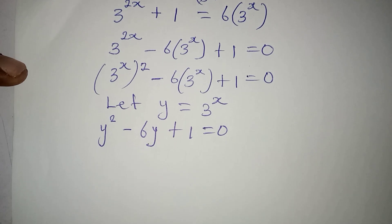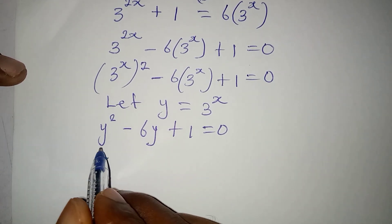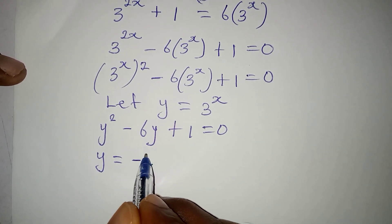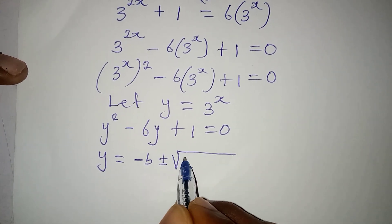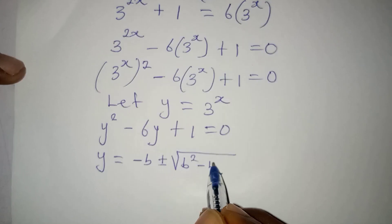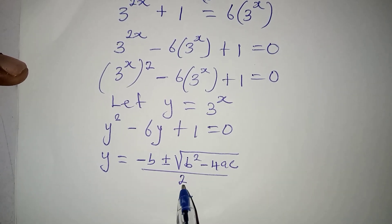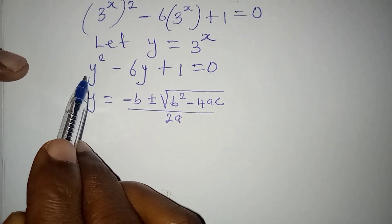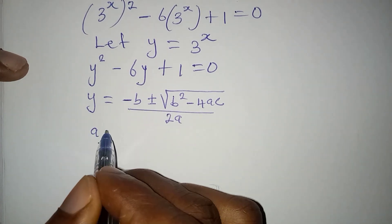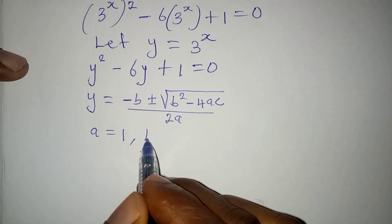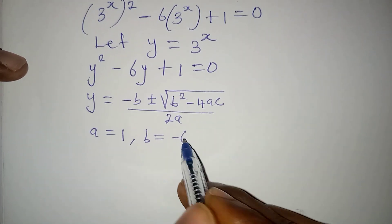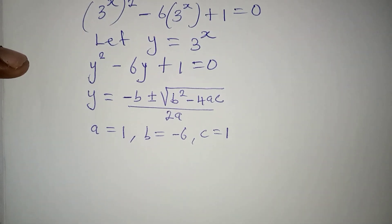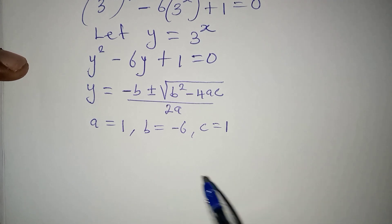This is a quadratic equation that we can solve using the formula method. The formula is: y equals negative b, plus or minus square root of b squared minus 4ac, all over 2a. You should understand that a is the coefficient of y squared. So a equals 1, b equals negative 6 — the coefficient of y — and c equals 1, that is the constant. From here, substitute directly into the formula.